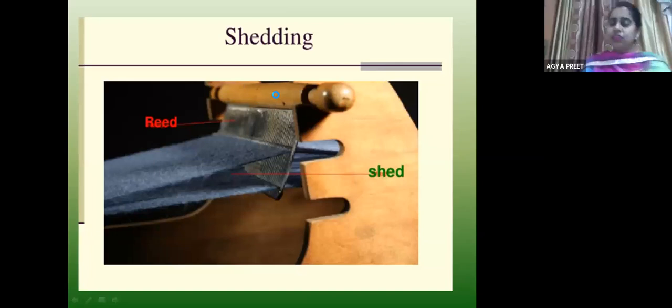Shedding: you have put the warp beam into the loom. Now we divide the warp yarns into two parts — that is shedding. Shedding is a process of separating the warp into two or more layers according to your weave design. Mostly two layers. This is done with the help of heald movement — the warp beam is separated out.